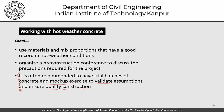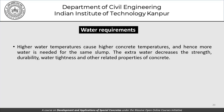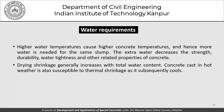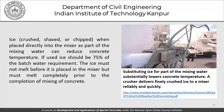Higher water temperatures cause higher concrete temperatures, requiring more water for the same slump. The extra water decreases strength, durability, water-tightness, and related properties. Drying shrinkage generally increases with total water content, and hot-weather concrete is also susceptible to thermal shrinkage as it cools. Effort should therefore be made to use cooled water, which reduces the concrete placing temperature and helps reduce water demand for a given level of workability.